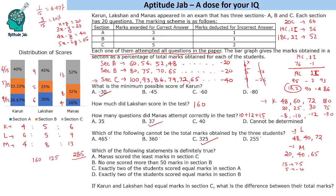For the definitively true statement: 'Manas scored the least in Section C' — Manas scored 65, but Karun has multiple possibilities, so this isn't certain. 'No one scored more than 50 in Section B' — Karun could have scored 60 in Section B, so false. 'Exactly two students scored equal marks in Section A' — this is true for some of Karun's cases but not all (e.g., if Karun scores minus 8, all three differ). So this is not definitely true.